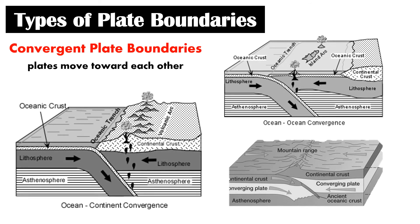The next type is convergent plate boundaries. If two plates move toward each other, we call it a convergent plate boundary. It could involve two continental plates colliding, one continental and one oceanic plate colliding, or two oceanic plates colliding. If two oceanic plates collide, an island arc or volcanic island arc may form. The denser plate will subduct, and as it subducts, volatile materials enter the mantle, causing magma formation. When this magma reaches the surface, you will have an island arc.